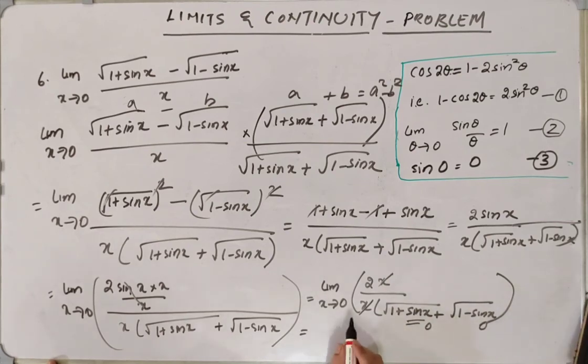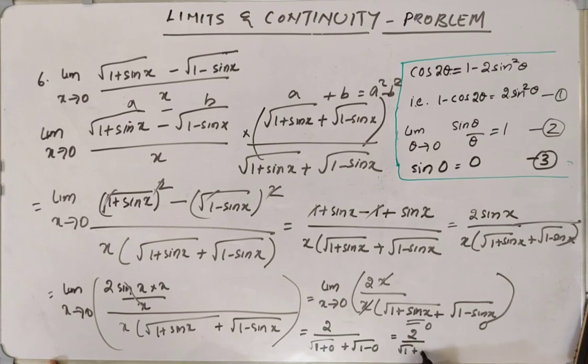So we will finally get 2 by 1 plus 0. We get 1 plus 0 plus 1 minus 0, which is 2 by root 1 plus root 1, which is 2 by 2, which is 1.